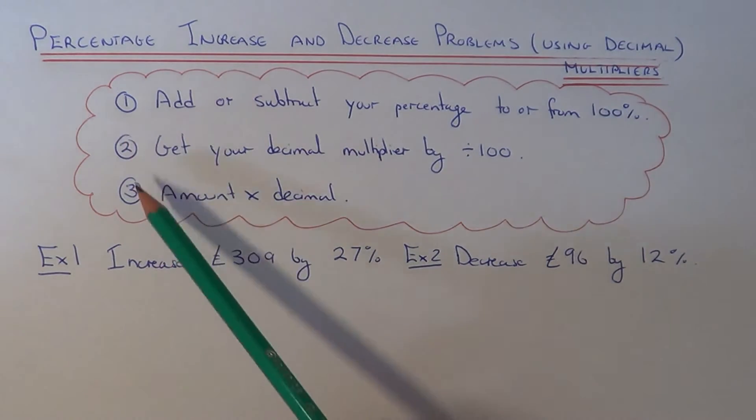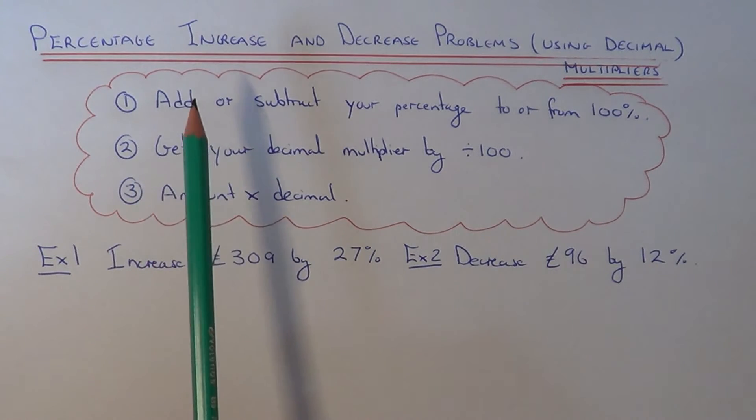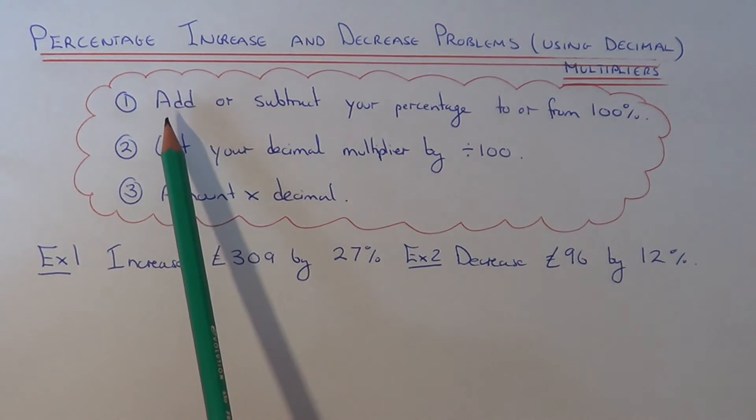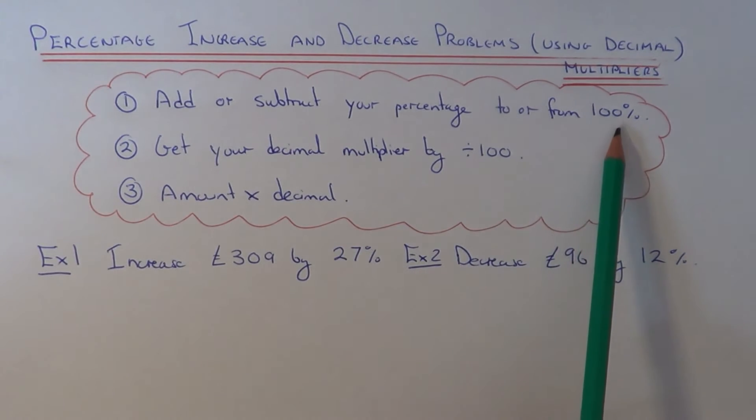Here are the three steps that you need to follow. The first step is to add or subtract your percentage to or from 100%. So if you're doing a percentage increase question, you add the percentage to 100.